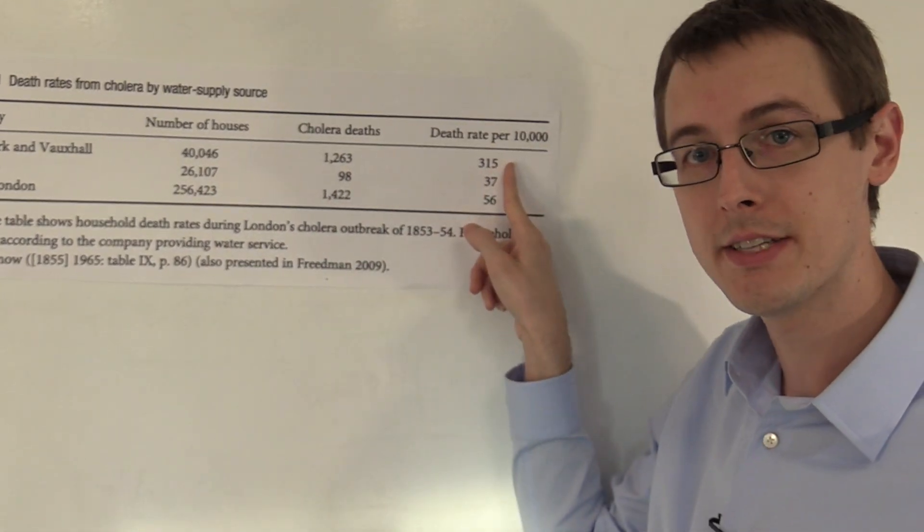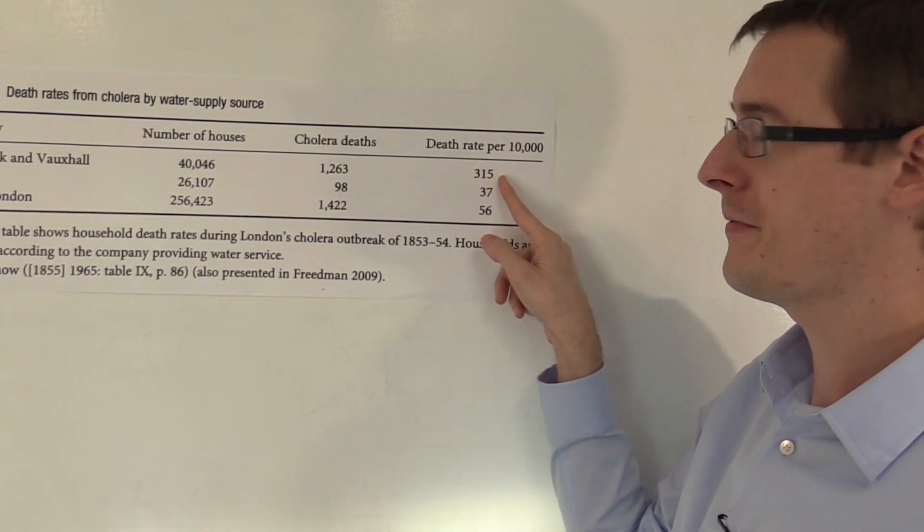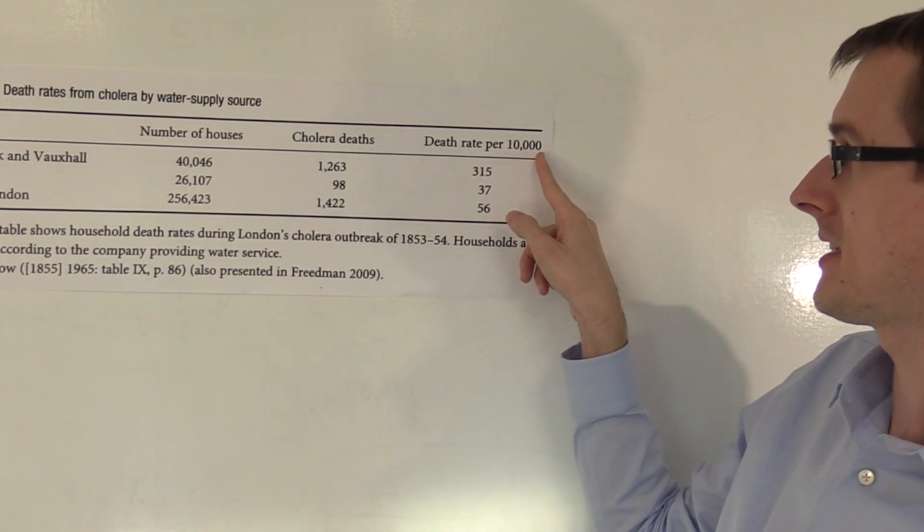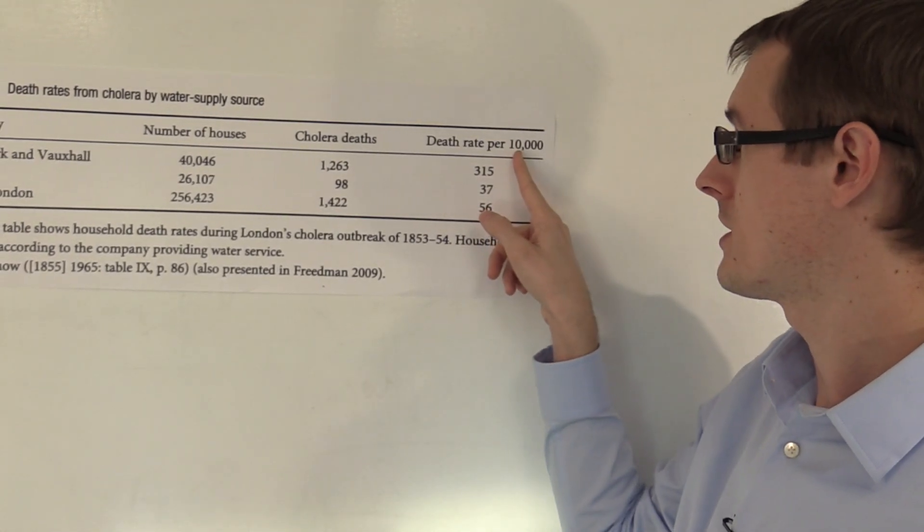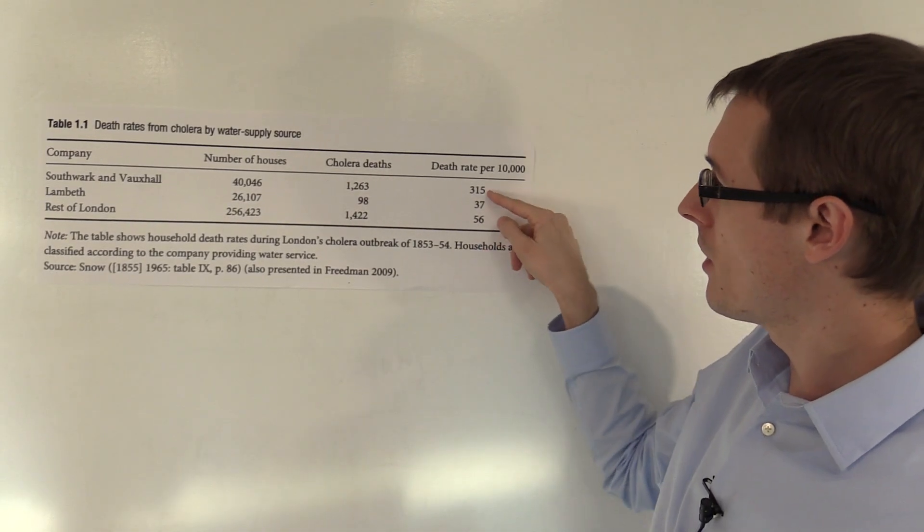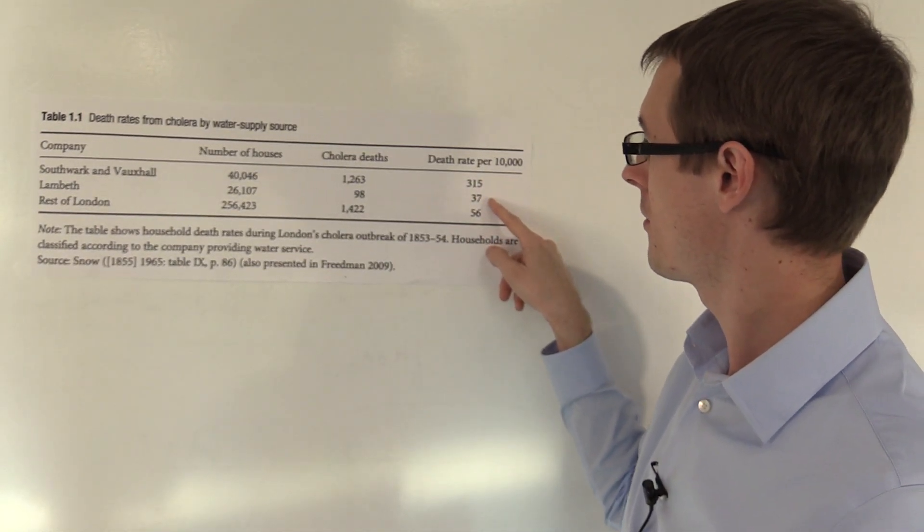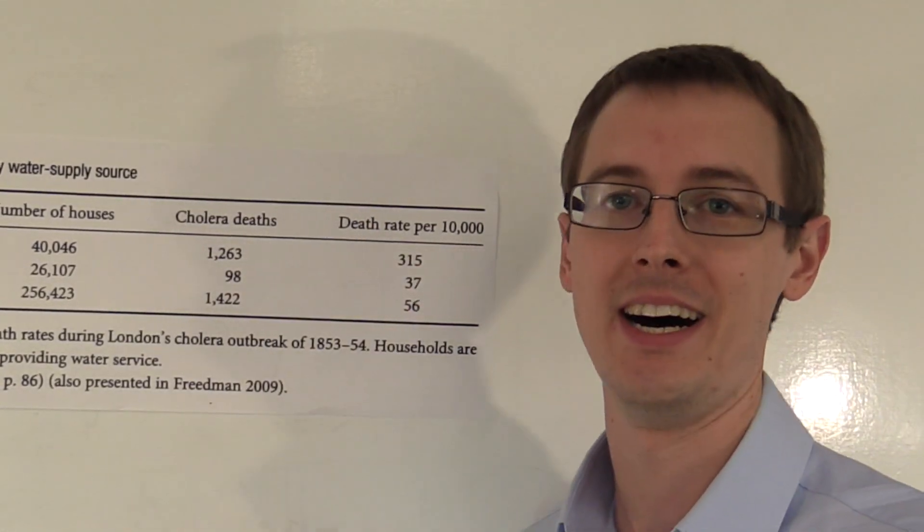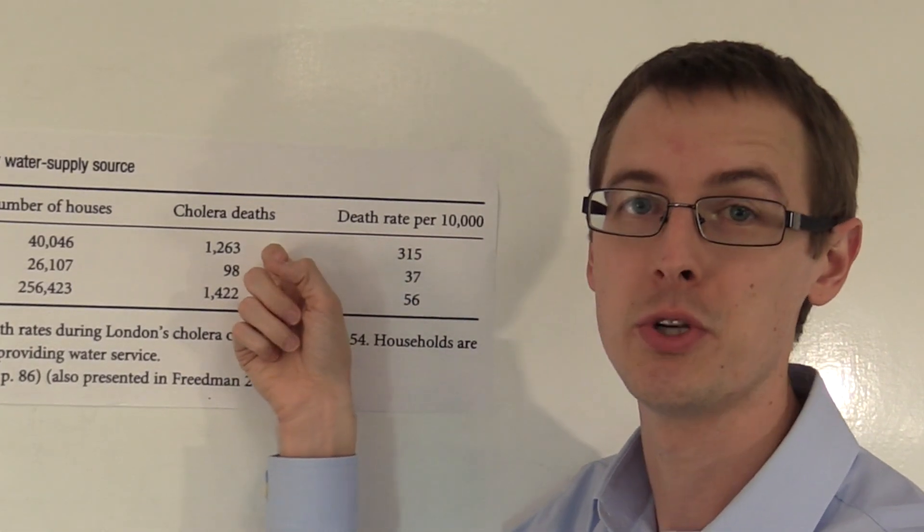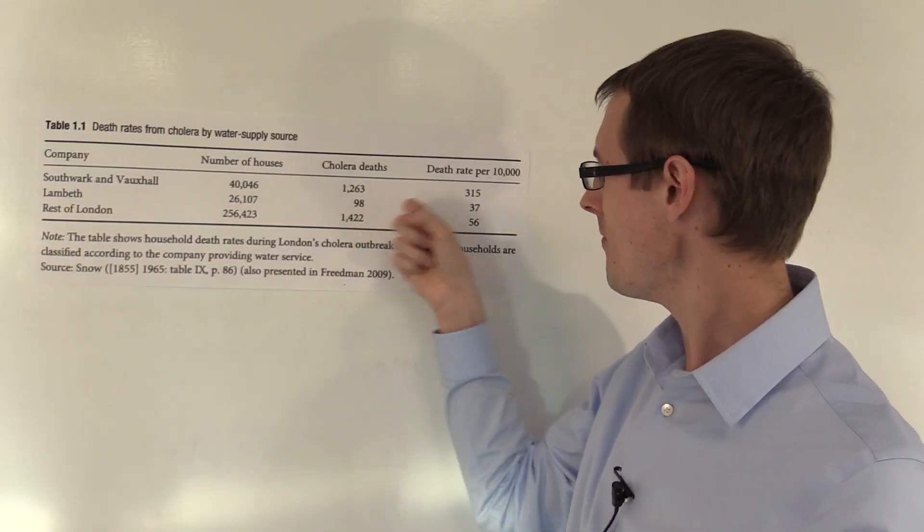If you compare the rate, in Southwark and Vauxhall, there are 315 deaths per 10,000 people, whereas for Lambeth, it was 37 deaths per 10,000 people. This is a huge increase, 315 over 37. Many more people died who were drinking the sewage water than the ones who were drinking the clean water.